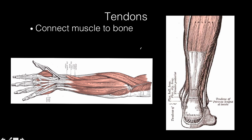Tendons' main job is to connect muscle to bone. Here on a leg you can see someone's Achilles tendon, which is connected to muscles on the back of the leg. When that muscle contracts, it pulls on the tendon, which is connected to the heel bone and moves the leg and the foot. In someone's arm, you can see all these muscles through the arm, and as they contract, they pull on the tendons that extend through the hand, pulling on the fingers and causing the arm to move.